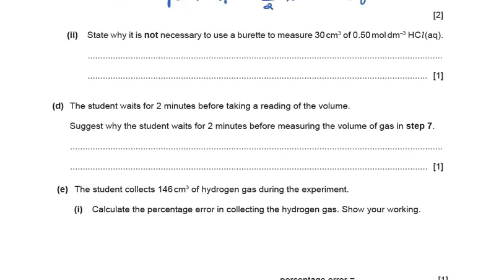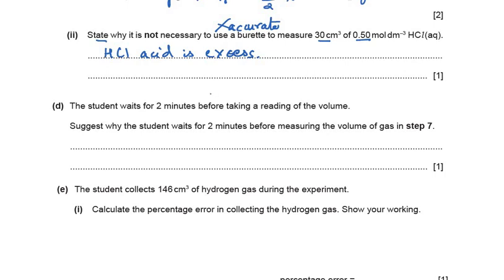The next part asks: why is it not necessary to use a burette to measure 30 cm³ of 0.5 mol/dm³ HCl? It is not required to use an accurately measured volume of HCl because the HCl is already in excess. If the volume of HCl is slightly more or less than required, it won't make much difference — that is why using a burette is not required.